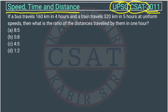If a bus travels 160 kilometer in 4 hours and a train travels 320 kilometer in 5 hours at a uniform speed, then what is the ratio? The question is asking ratio of the distance travelled by them in 1 hour.